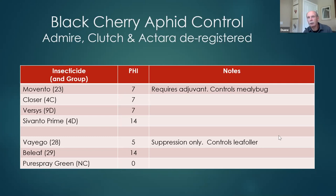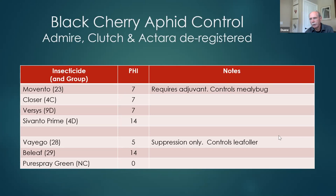The time to begin looking for black cherry aphid is around petal fall time or soon after. You may find some now, but a little bit later when leaf development starts to occur — on clusters of leaves right at the trunk of the tree is where they often appear first, then eventually move out to the terminals of new growth. There's no real action threshold for black cherry aphid, but it's worth monitoring.